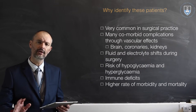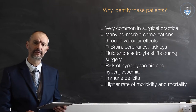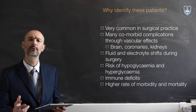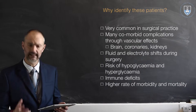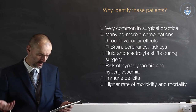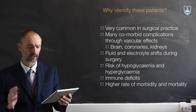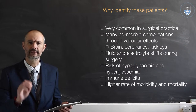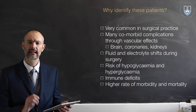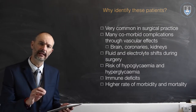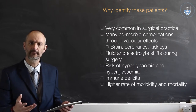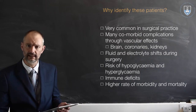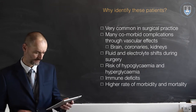It is very common in surgical practice to see a diabetic patient, but why is it so important to identify them? Well, many of them will have comorbid complications through vascular effects. They have microvascular problems that affect their brains, their coronaries with cardiac problems, and especially their kidneys, not to mention their peripheries.